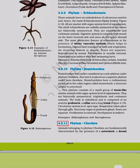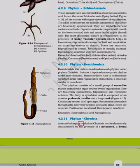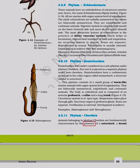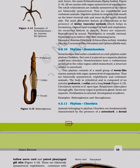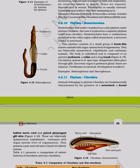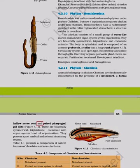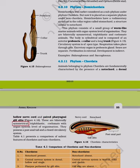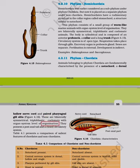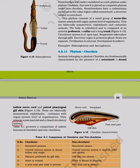Phylum Chordata: Animals of this phylum are fundamentally characterized by the presence of a notochord, a dorsal hollow nerve cord, and paired pharyngeal gill slits. They are bilaterally symmetrical, triploblastic, coelomate with organ system level of organization. They also possess a post-anal tail and a closed circulatory system.